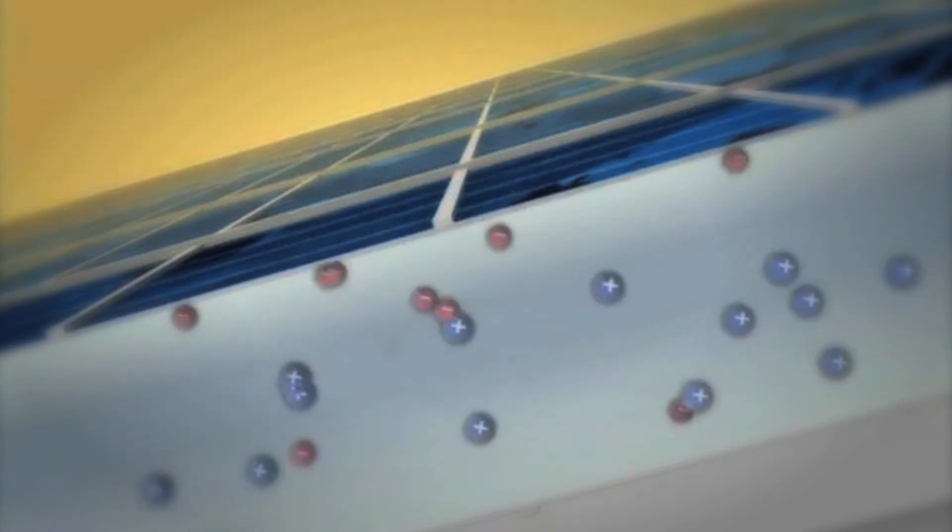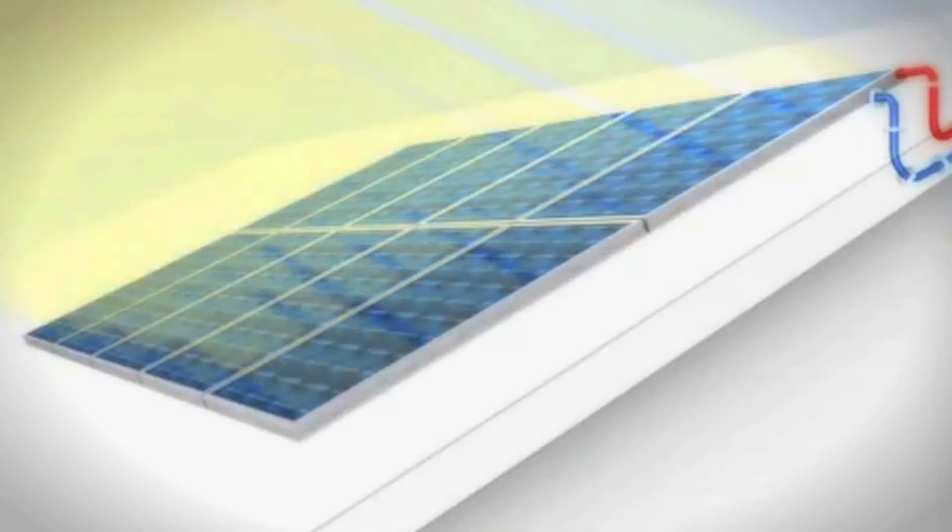Electrical conductors that are attached to the positive and negative sides form an electrical circuit that captures these free electrons to form a direct electric current.